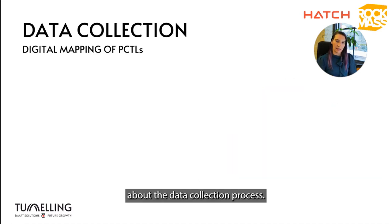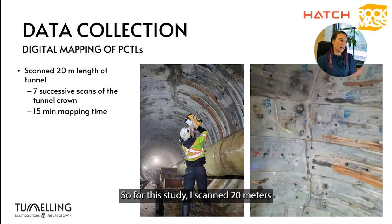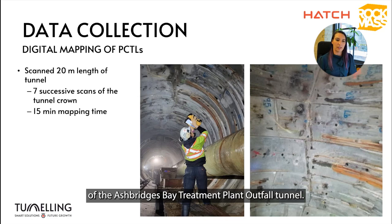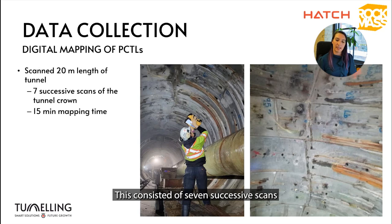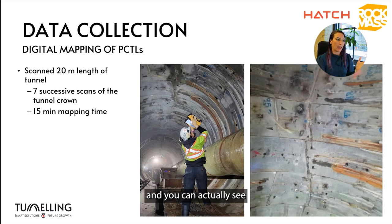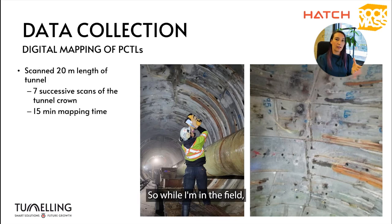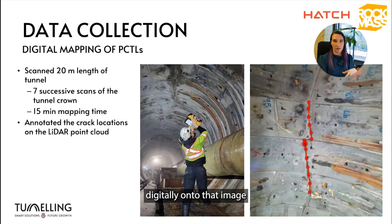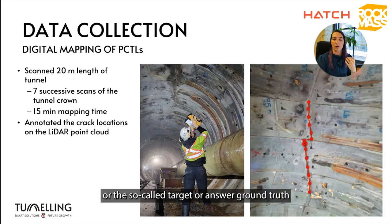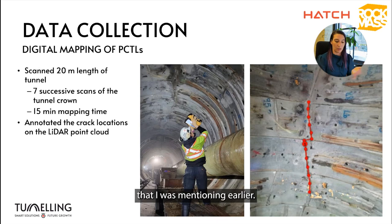For this study I scanned 20 meters of the Ashford's Bay treatment plant outfall tunnel. This consisted of seven successive scans and took about 15 minutes to capture. You can see me standing in the middle of the tunnel scanning the crown, and you can actually see the crack in the background that I'm mapping. On the right is a zoomed-in HD image output from the RockMass EON showing that crack. While in the field I captured these scans and also annotated digitally onto the image where the cracks are located — this annotation is the target or ground truth used to train the algorithm.